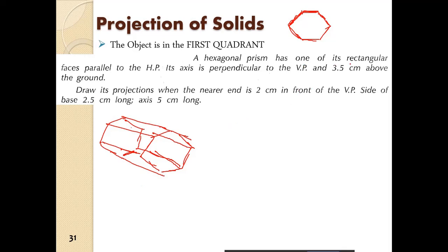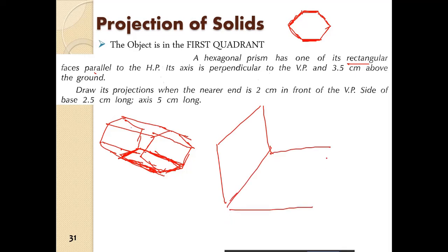The hexagonal prism has one of its rectangular faces parallel to the HP. So suppose this face — this is a rectangular face, and it is parallel to the HP. We can visualize the prism like this: one of the faces of the prism will be parallel to the HP. And then we have to develop the hexagon above it — the hexagon lying like this is perpendicular, and its axis is perpendicular to the VP.